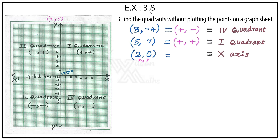Exercise 3.8, question number 3: find the quadrant without plotting the points on a graph sheet. First point: 3 comma minus 4. 3 is positive, minus 4 is negative, so it is plus comma minus. Where does it come? Plus comma minus — this is plus-plus, minus-plus, minus-minus, plus-minus — so plus comma minus.